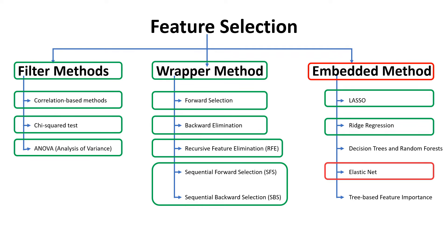We are heading towards the end of this feature selection series. In the previous video we covered elastic net; next in the series is tree-based feature importance — finding feature importance based on tree-based techniques like decision trees and random forest. I'm assuming you're already familiar with decision trees and random forest. If not, I'll drop links to those videos in the description section.